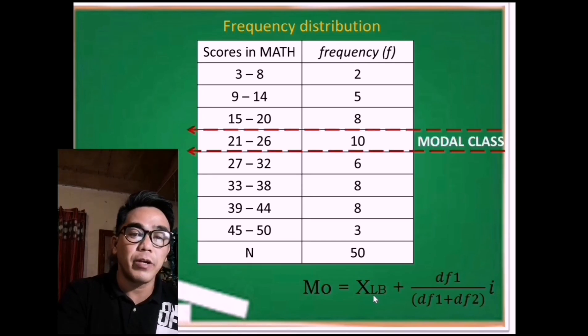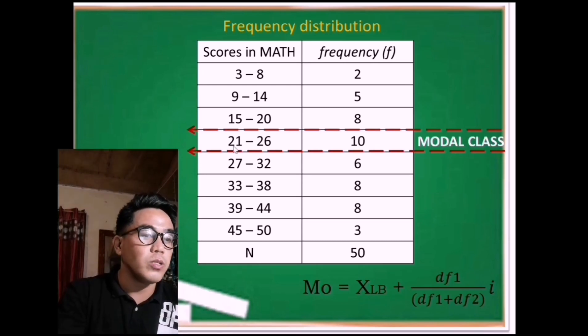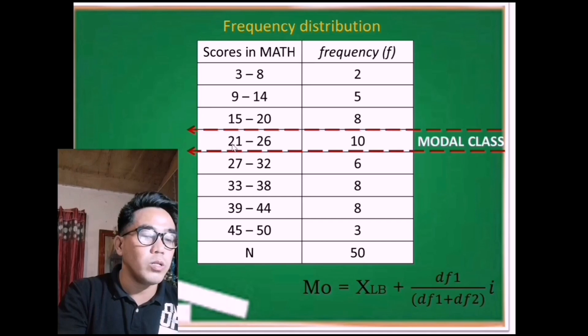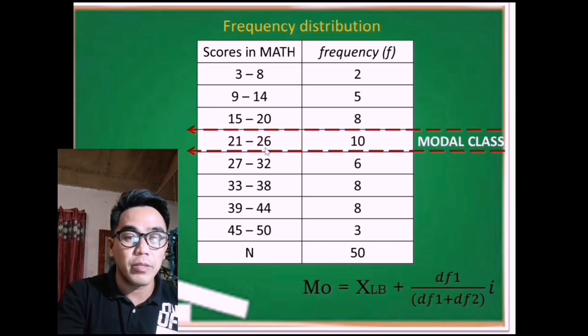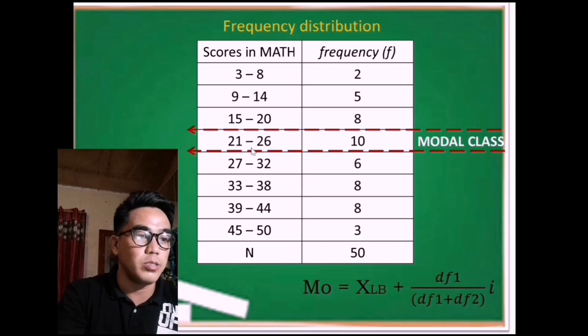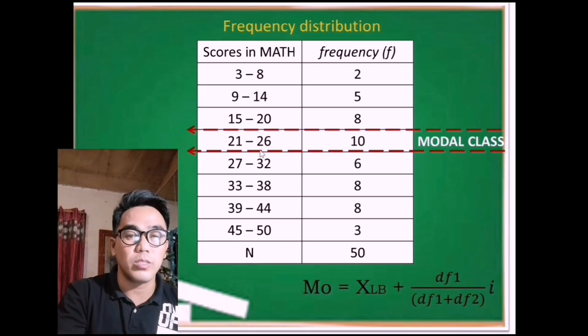Now, how can we find the XLB? XLB is the lower boundary. In the class limit 21 to 26, which do you think is the lower limit? Is it 21 or 26? Yes, of course, the lower limit is 21.